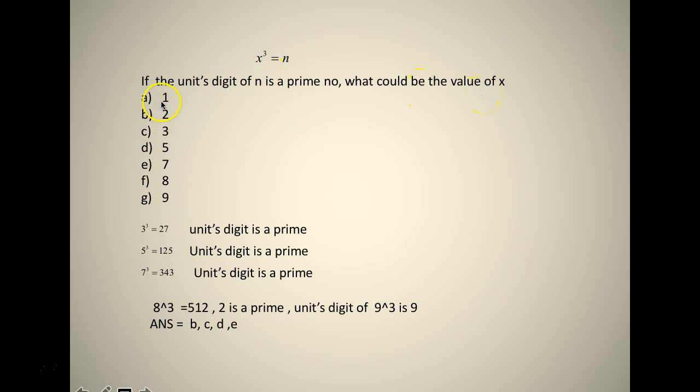Starting with 1, 1 is not a prime. So we come to 2: 2 cubed is 8, it is not a prime. 3 cubed is 27, units digit is a prime. 5 cubed is 125, units digit is a prime. 7 cubed is 343, units digit is again a prime. 8 cubed is 512, 2 is a prime.